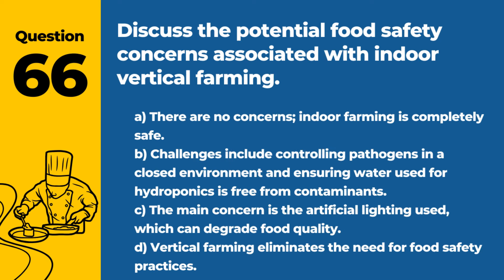Question 66. Discuss the potential food safety concerns associated with indoor vertical farming. a. There are no concerns; indoor farming is completely safe. b. Challenges include controlling pathogens in a closed environment and ensuring water used for hydroponics is free from contaminants. c. The main concern is the artificial lighting used, which can degrade food quality. d. Vertical farming eliminates the need for food safety practices. Answer: b. Challenges include controlling pathogens in a closed environment and ensuring water used for hydroponics is free from contaminants. Managing these risks is essential for the safety of produce from indoor vertical farms.